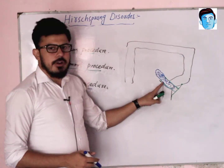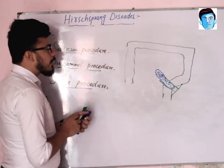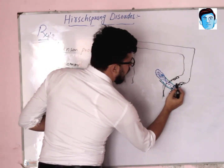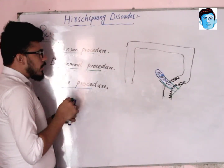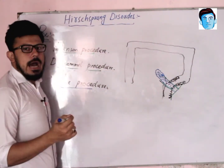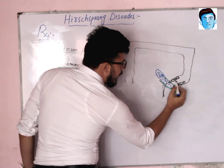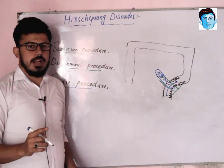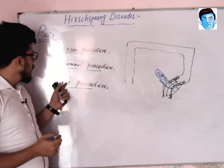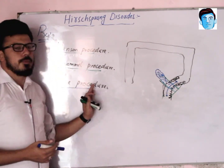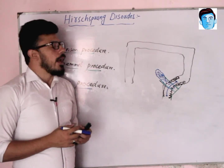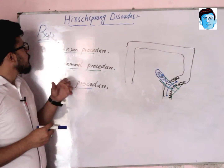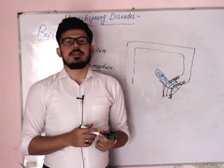In the Soave procedure, the non-affected ganglionic portion — which is responsible for intestinal movement — is pulled from one end through the affected part of the intestine, and both ends of the normal portion are connected through the affected segment. This is done by a SORP maneuver. The most commonly performed procedure overall is the Swenson procedure.